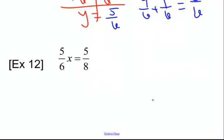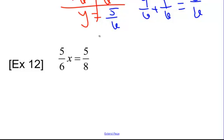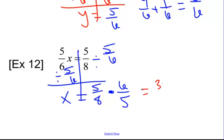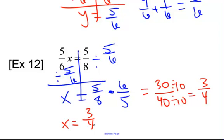And number 12. This is 5 sixths times x, so I need to divide by 5 sixths. Divide by 5 sixths. Remember, we don't divide by fractions, we multiply by the reciprocal. So we're going to do keep, change, reciprocal. Okay. 6 times 5 is 30. 5 times 8 is 40. So, ending in a 0, divide by 10, right? So that gives us 3 fourths. So x equals 3 fourths. Okay. Remember, you're solving these the same exact way you solved equations, but now we're adding fractions and decimals.